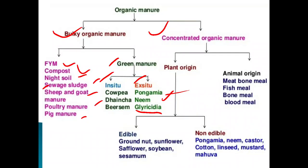Next are concentrated organic manures. These are organic manures which are added in the soil in appreciable amounts to supply organic matter and nutrients. This is called concentrated organic manures.